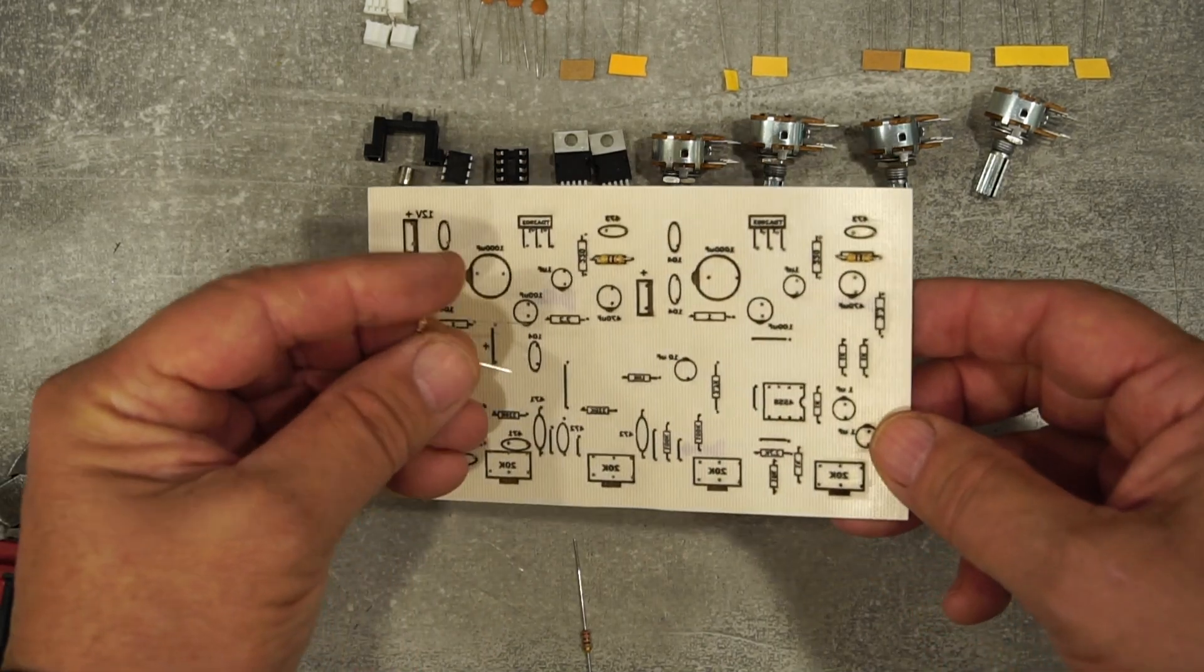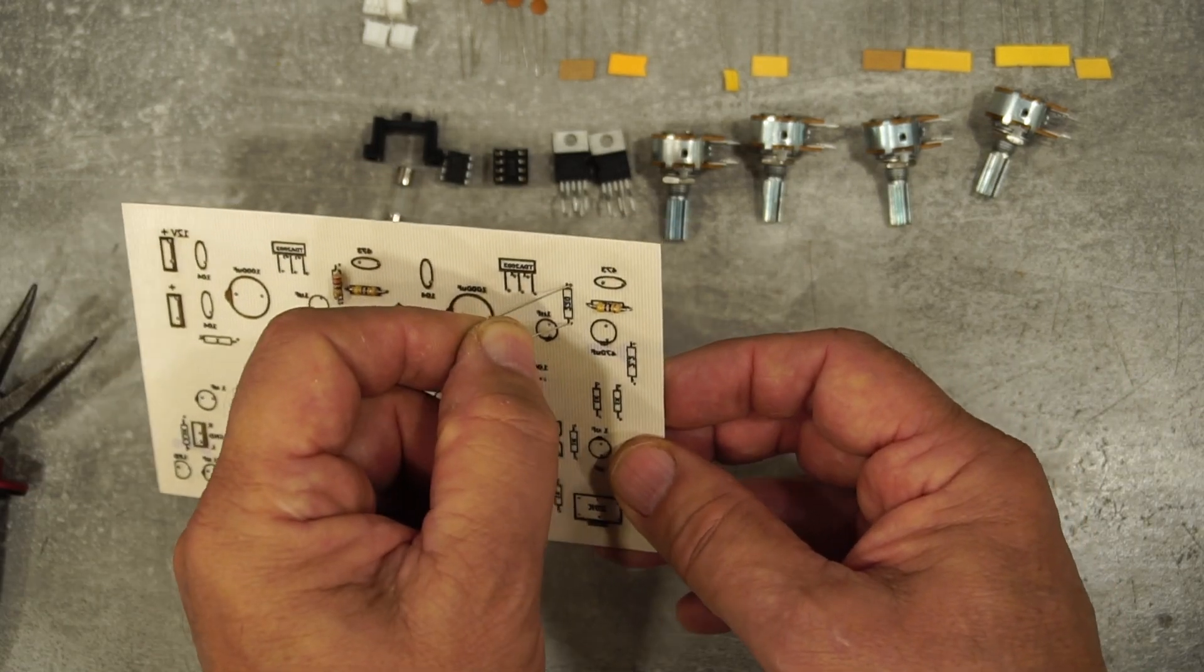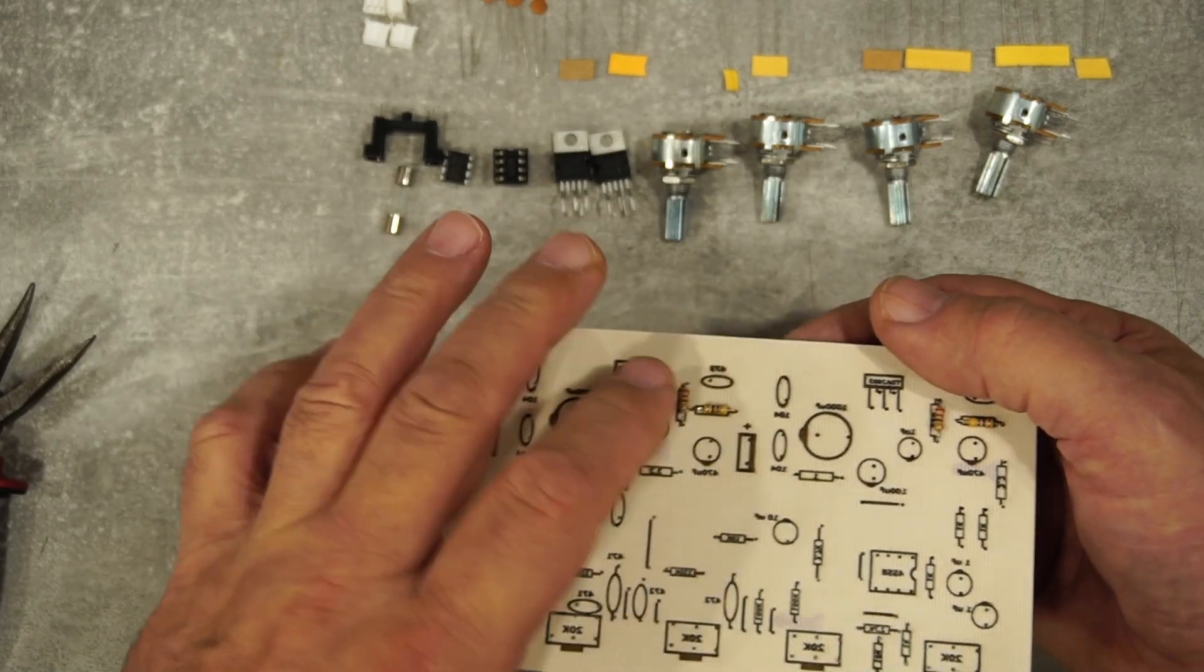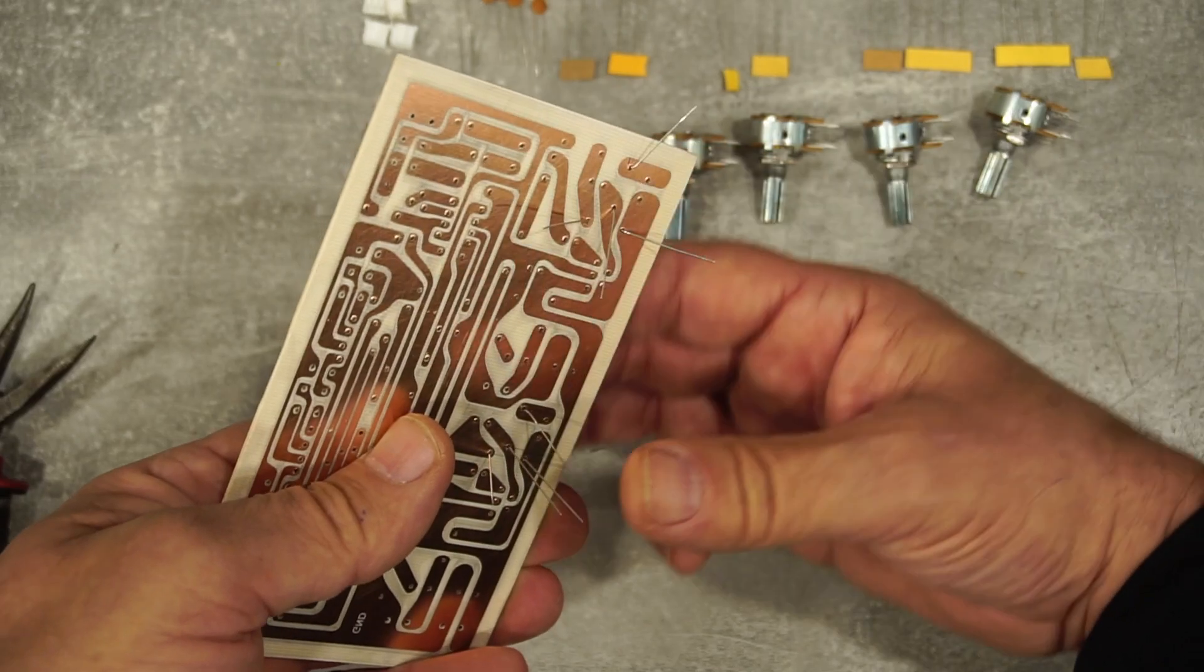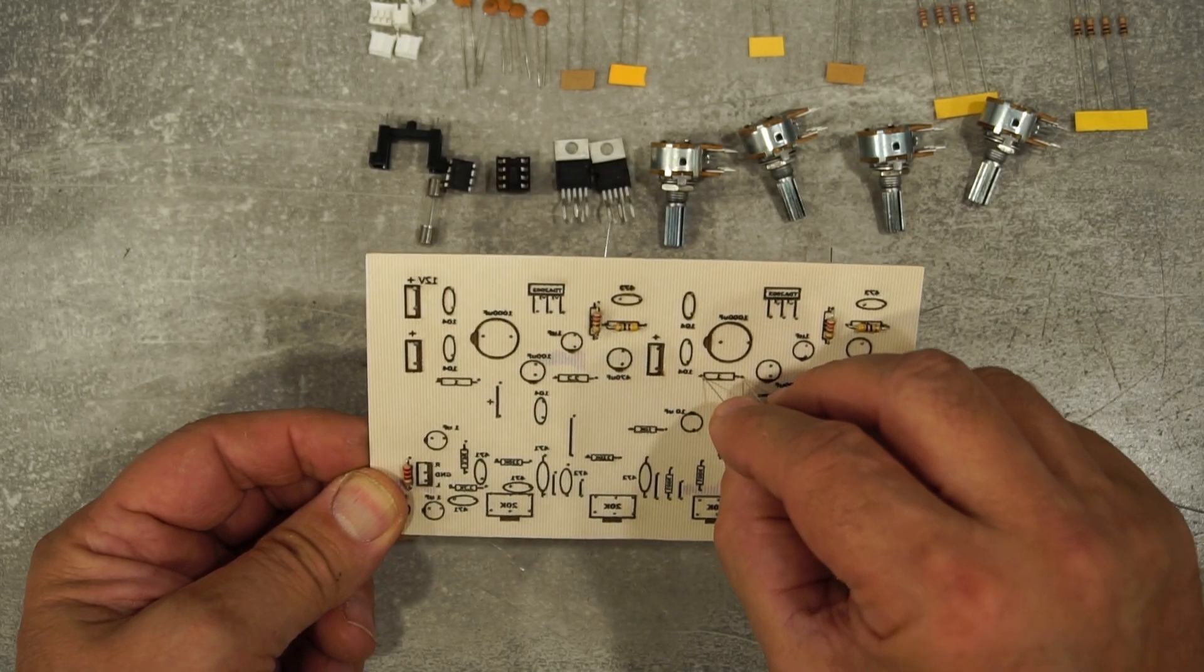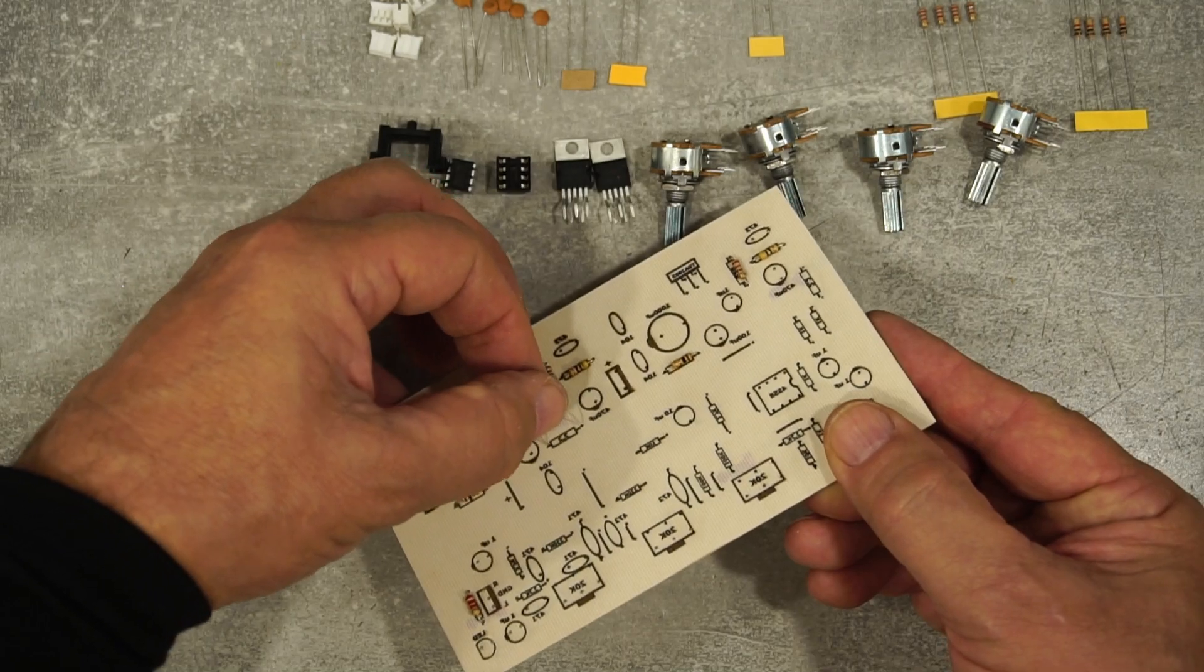First, I place the 220 ohm and 47 ohm resistors. I need to secure them. Then 1 ohm resistors and 2.2 ohm resistors.